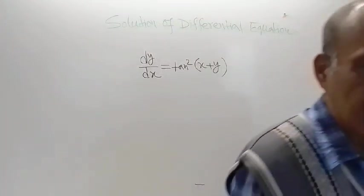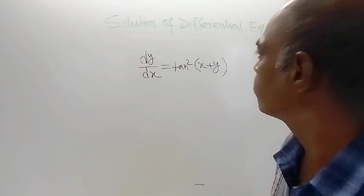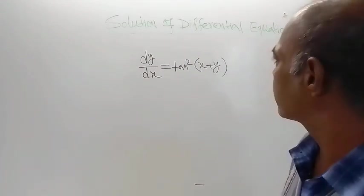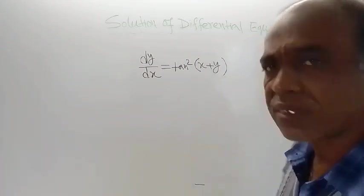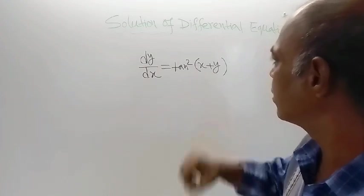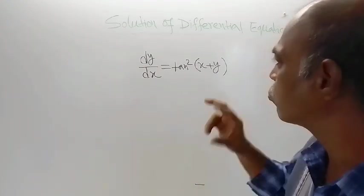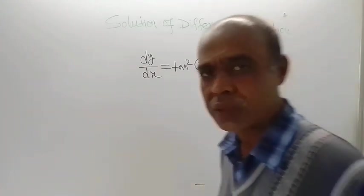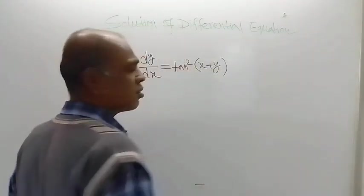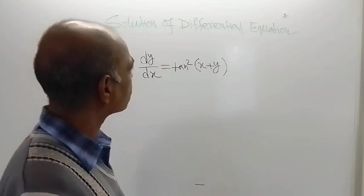So what is the problem in solving this? The problem is that tan square (x plus y) is there, and to integrate or solve the given equation we need to separate the variables x and y. But in this form, separation of variables is not possible.